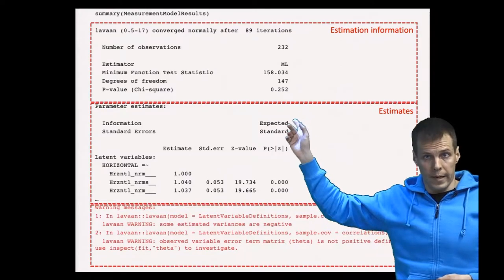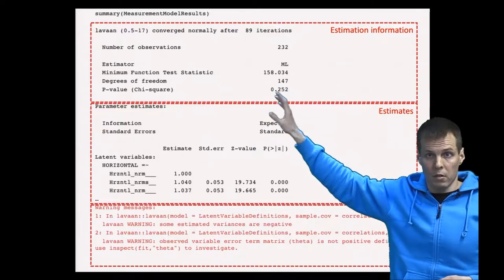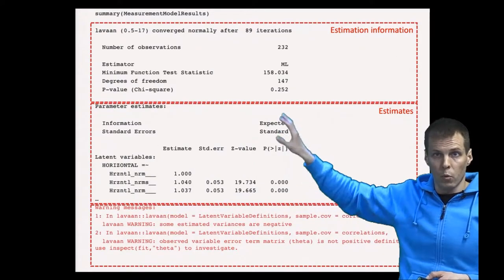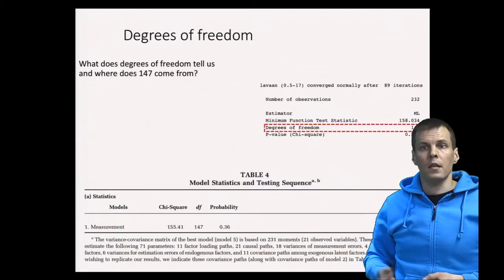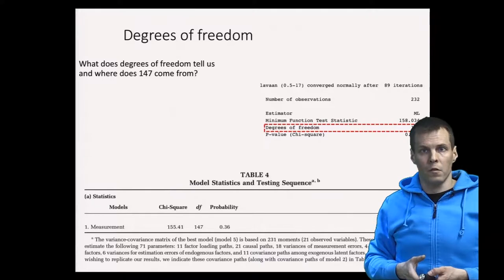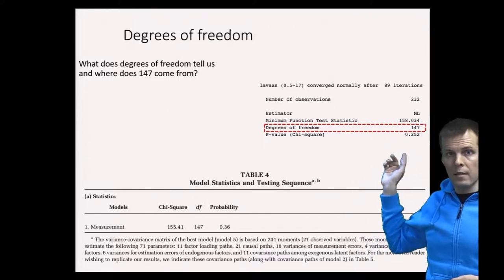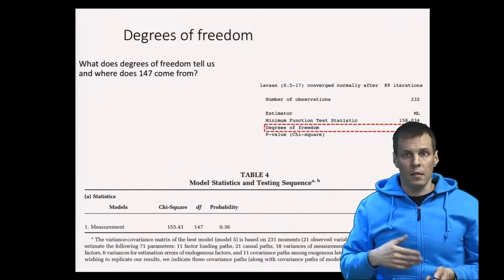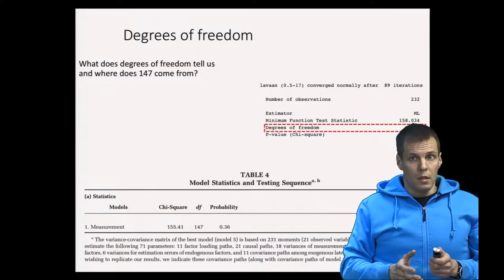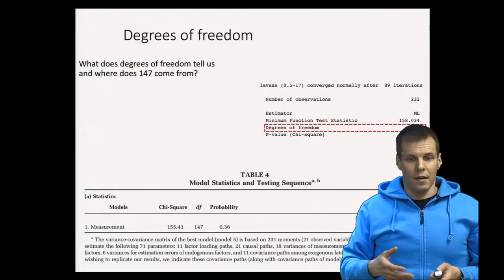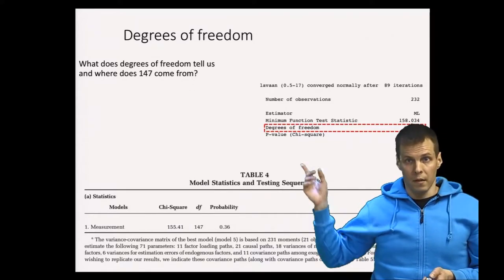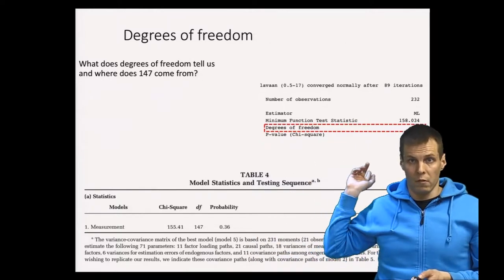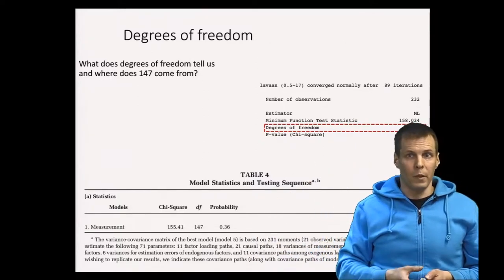Let's look at the estimation information. This same kind of information is given by any structural equation modeling software, not exclusive to R. The degrees of freedom is 147, which matches the reported article. It's a good exercise to calculate the degrees of freedom by hand, because then you understand what was estimated. There is a nice paper by Cortina and colleagues where they calculate degrees of freedom from published articles and check whether they match — and they don't always match, which is an indication something is off in the analysis.